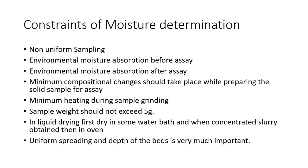Sometimes you have to reduce the size of the product or create a powder. For example, when grinding sugar, there must be no compositional change. Minimum heating during sample grinding is critical because heat produced during grinding can change the composition. When you use a chocolate or sugar sample it may become warm. The sample weight should not exceed 5 grams. For liquid samples, first dry in a water bath until concentrated slurry is obtained, then transfer to oven. Uniform spreading and depth of beds is very important.